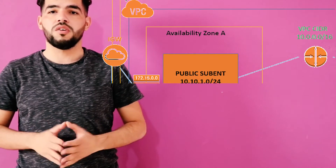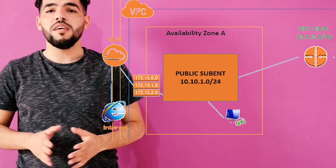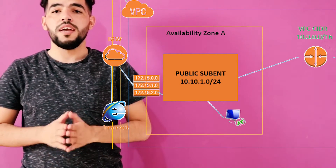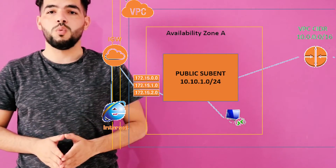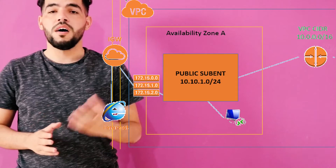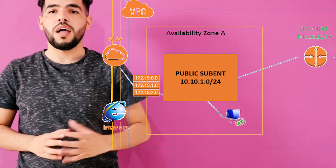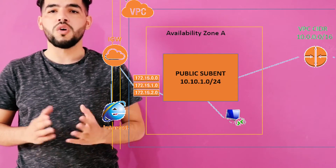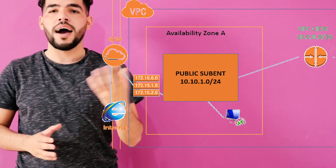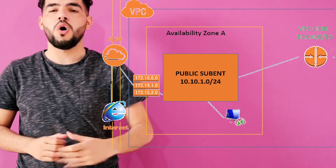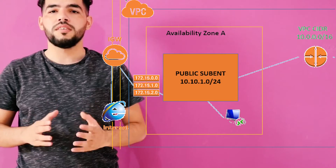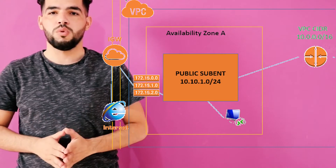In one case, we have a machine in the public subnet and this machine needs to access the internet. In this case, we need two things: we need the route table and we also need the IGW, or the Internet Gateway.